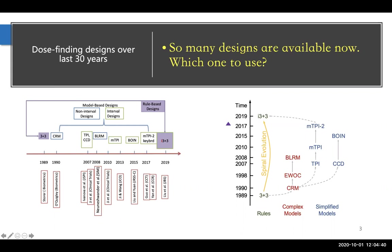These two methods started to look at dose-finding from a different angle, basically trying to use probability intervals for statistical inference and simpler models to alleviate some of the practical burdens in application. The BRRM — the Bayesian Logistic Regression Method — was published in 2008. It's also a fully model-based design, and it has the element of interval inference in it.